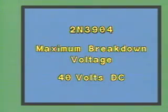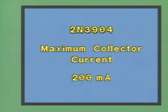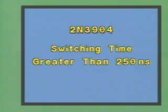Reviewing its specifications, we know that the 2N3904 has a breakdown voltage listed at 40 volts DC. Its collector current is rated at 200 milliamps.